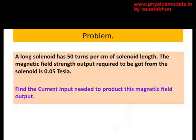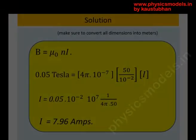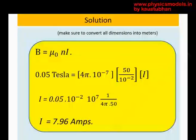So B is 0.05 Teslas. That's equal to mu zero, which is 4 pi into 10 to the power minus 7. Number of turns is 50 per centimeter, that means 50 by 10 to the power minus 2 meters.